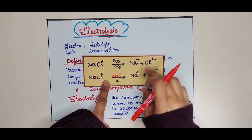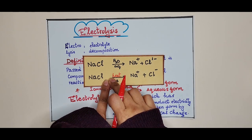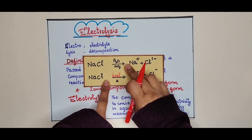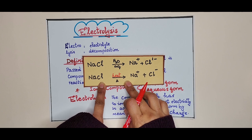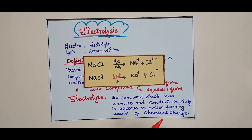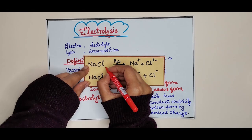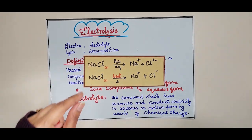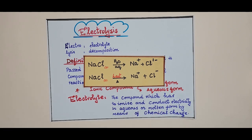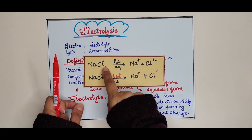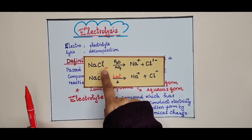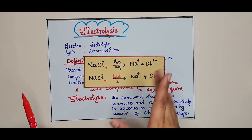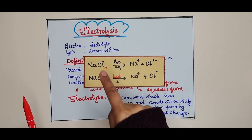An ionic compound can conduct electricity when it is in aqueous state or when it is melted. In solid sodium chloride, the ions are fixed to their positions, so they are not free to move and therefore cannot conduct electricity.